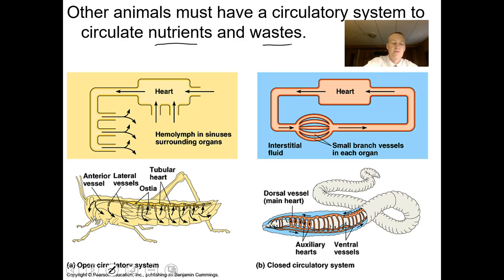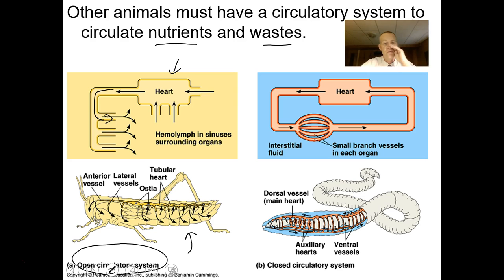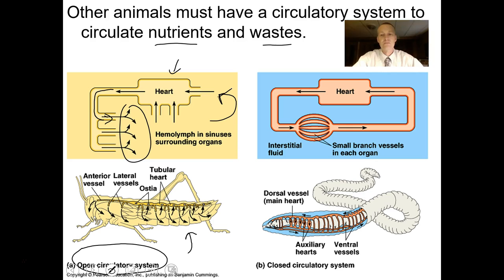An open circulatory system is like what you would see in insects or arthropods. These creatures have a heart — a pumping structure — that pumps hemolymph, a blood-like material, through a series of short vessels, and those fluids circulate through the body. Once gases or nutrients are depleted, the heart circulates the fluids again. It's called an open circulatory system because the hemolymph is open to the body cavity, not contained exclusively in blood vessels.